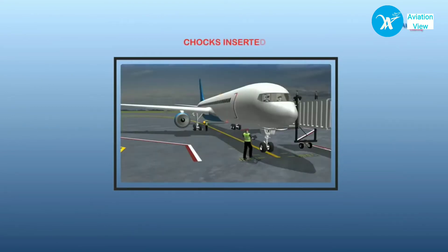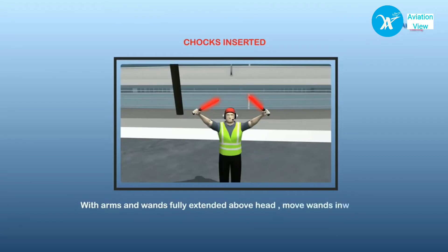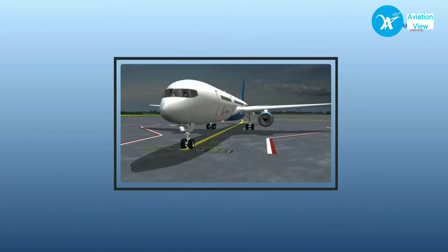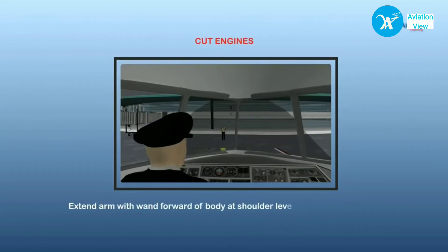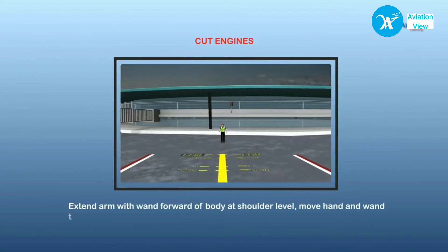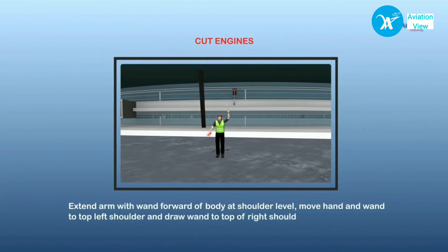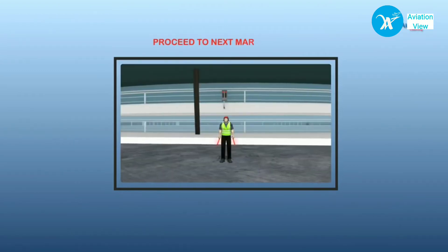Once the aircraft has come to the required position, the marshaller waits for ground support staff to insert chocks, then signals to the captain that chocks are in place by moving the wands inwards in a jabbing motion until the wands touch. Once the captain signals that brakes have been set, the marshaller signals the captain to cut engines by extending the left arm upwards and drawing the right wand across his throat in a slicing motion.